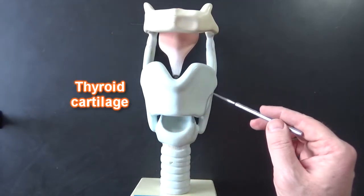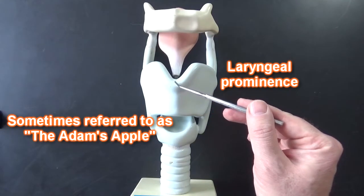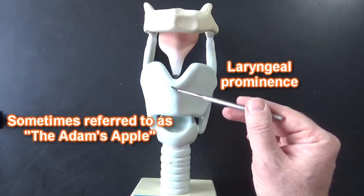This structure right here is the thyroid cartilage and this is the laryngeal prominence right here. More prominent in males than it is females.